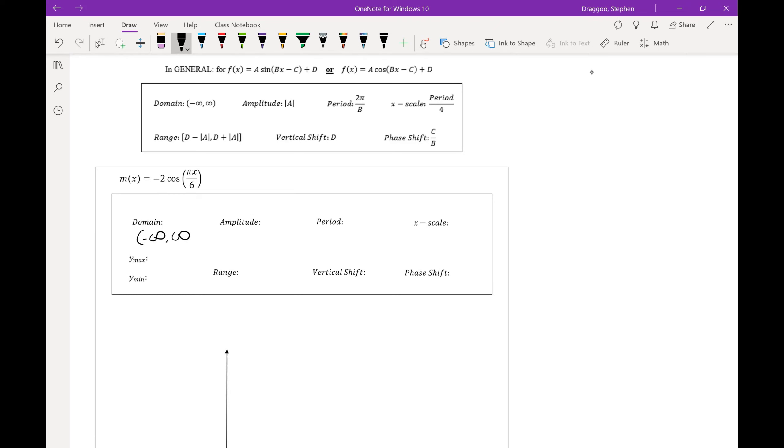Once again, the domain is always all real numbers. The amplitude should be the absolute value of a, the absolute value of negative 2 is 2. b this time is π over 6. The period should be 2π divided by b, so 2π divided by π over 6 is 12. That x scale is the period over 4, so 12 over 4, which is 3. Minimum and maximum y values are 2 and negative 2. That range is negative 2 to 2, and still no vertical shift or phase shift.